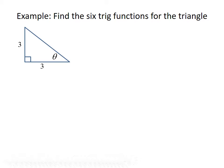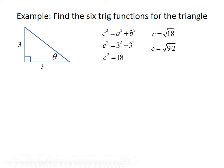Let's do an example where we want to find the six trigonometric functions for a given triangle. We have a right triangle with legs of lengths 3 and 3, and we want to use this to find all of the trig functions for the given angle theta. The first thing we need to do is use the Pythagorean theorem to find the third side. C squared equals A squared plus B squared, so C squared equals 3 squared plus 3 squared. C squared is 9 plus 9, which is 18. Taking the square root of both sides gives us C equals the square root of 18. We can write 18 as 9 times 2, and since 9 is a perfect square, we can remove it from the square root, giving us 3 times the square root of 2. So the hypotenuse has length 3 root 2.